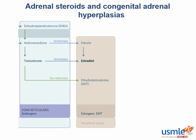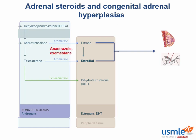Sex steroids are pretty essential to normal development, but can you think of any times they're pretty unhelpful or even downright harmful? Sex steroids are responsible for the growth and development of certain tissues. Certain breast cancers happen to be estrogen responsive, and the same also goes for ovaries. So we employ certain drugs: the aromatase inhibitors anastrozole and exemestane prevent the synthesis of estrogens from their androgen precursors. Estrogens can also be blocked on the receptor end with receptor blockers like tamoxifen and raloxifene.